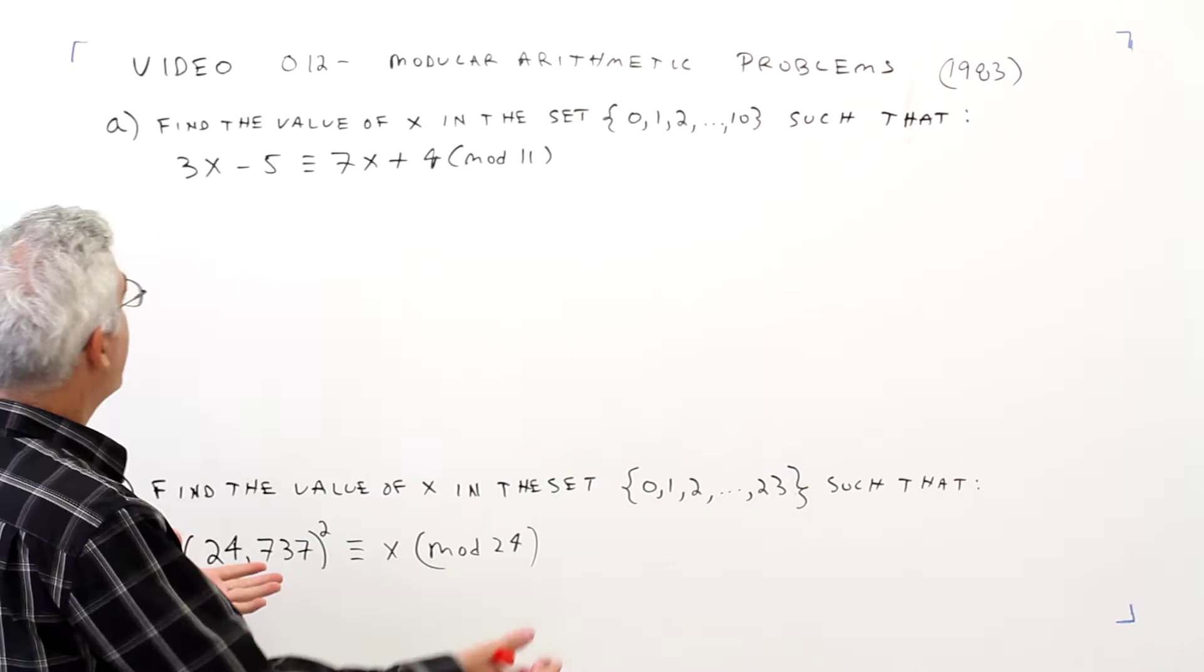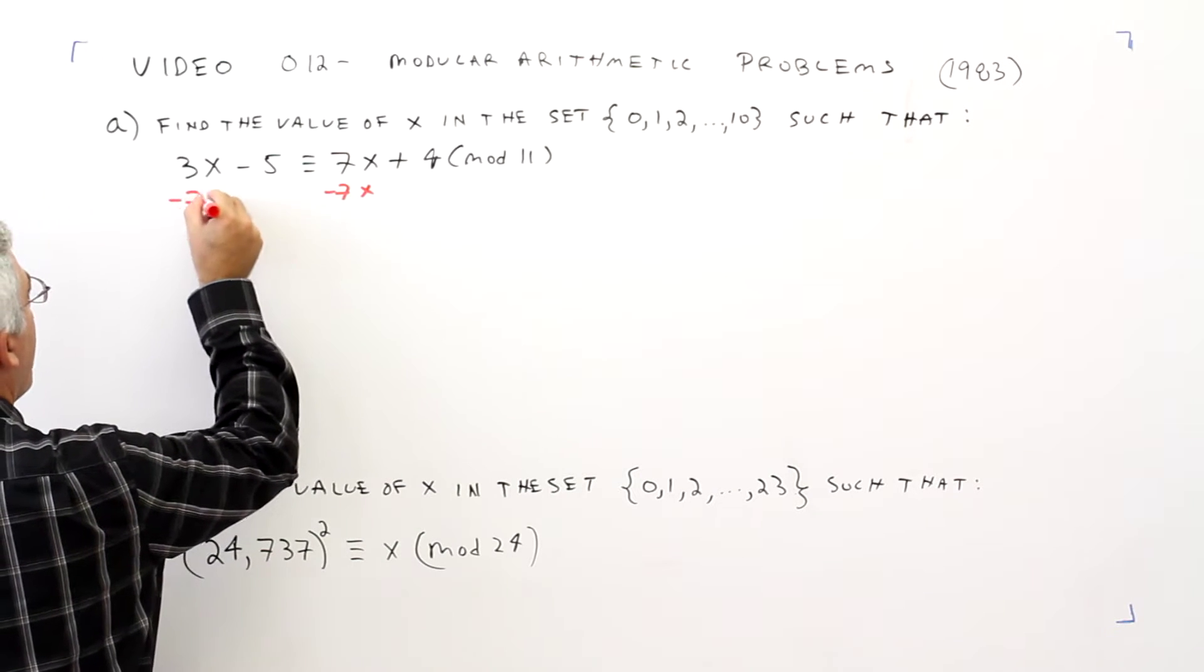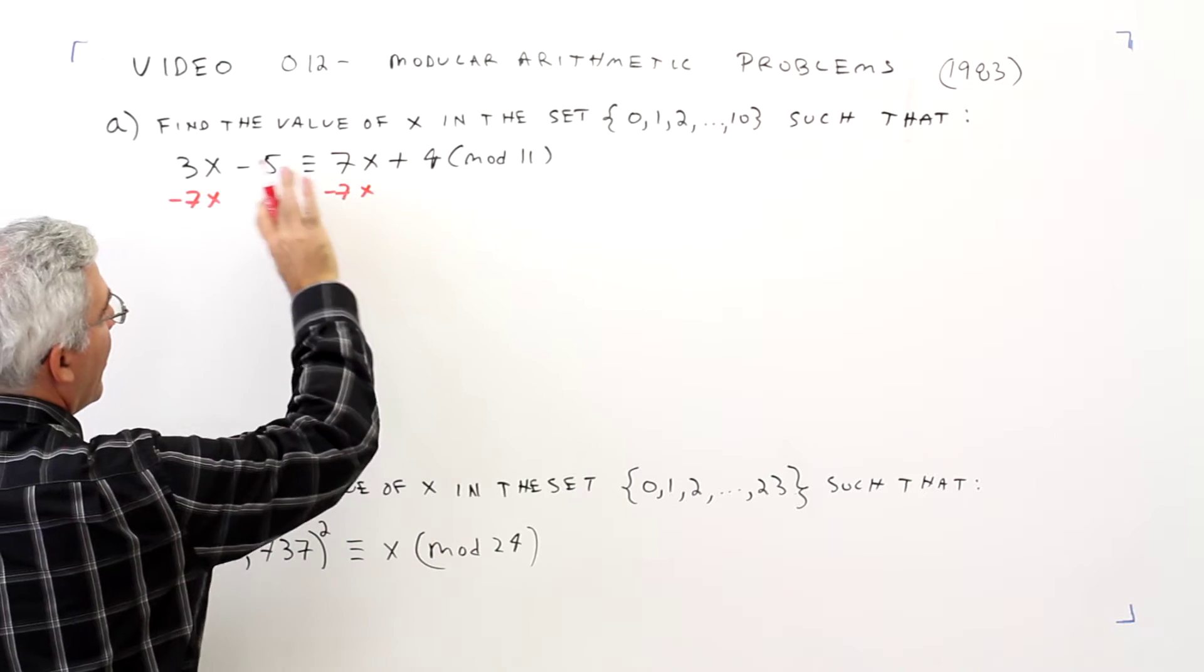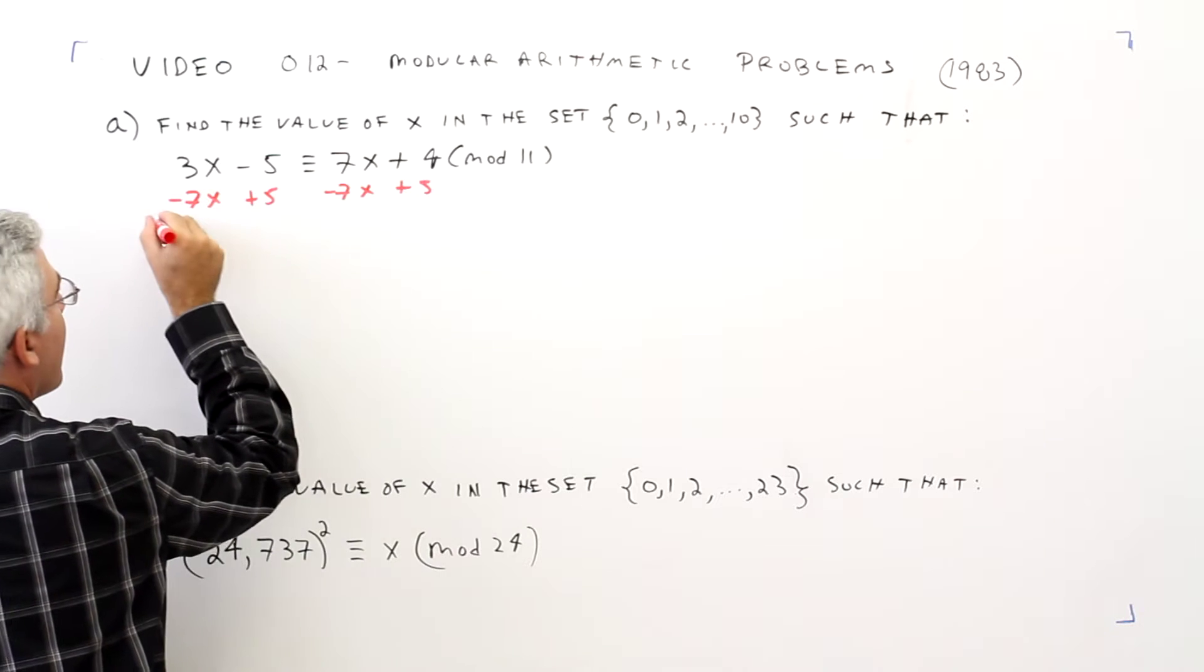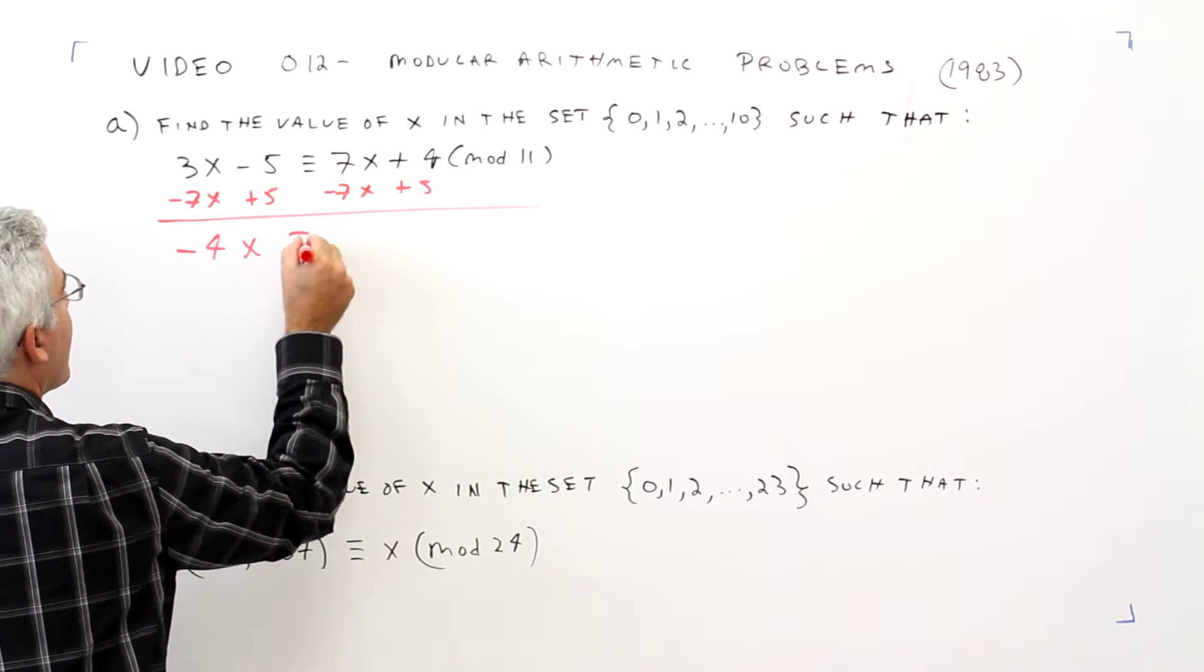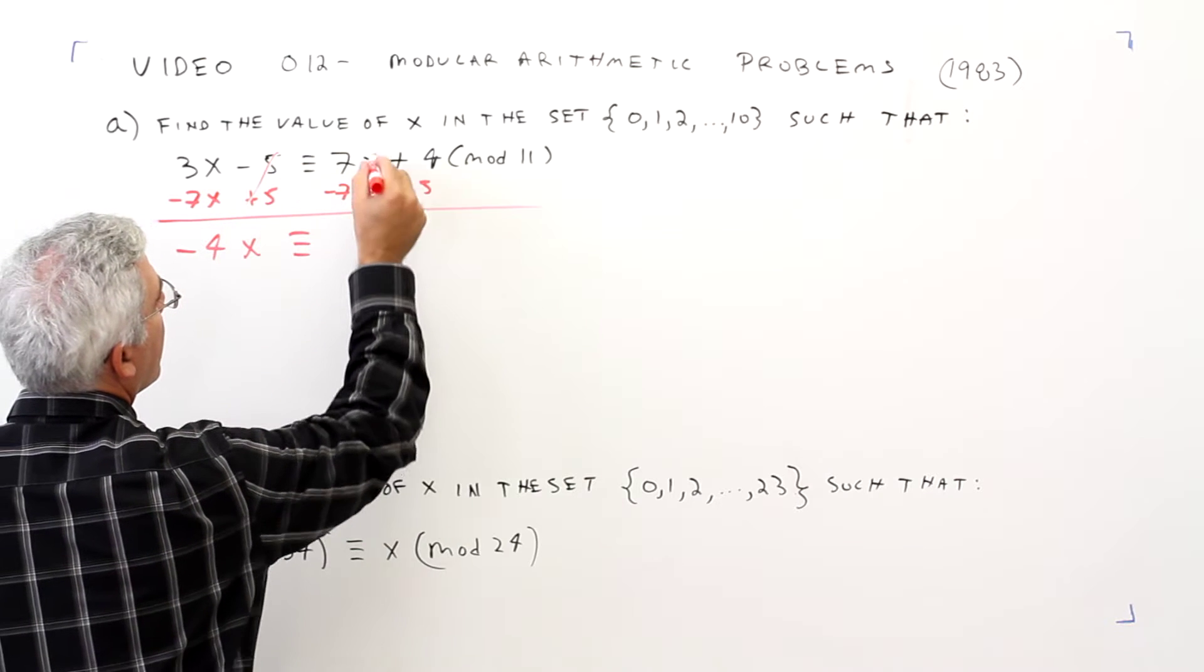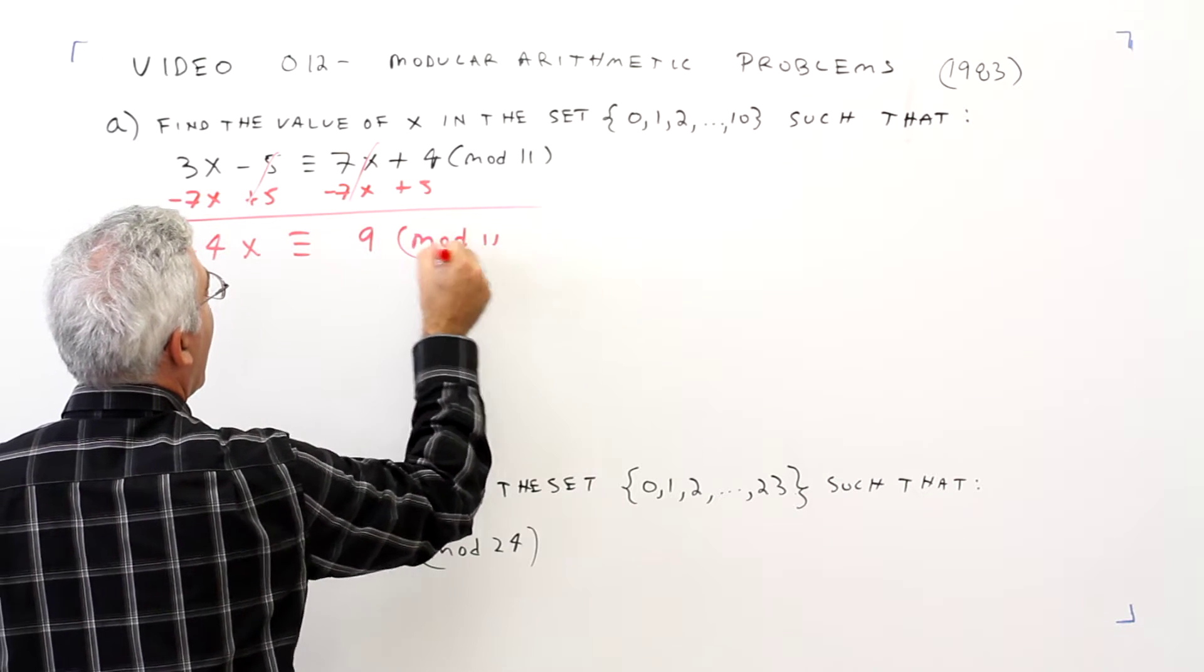All right, so let's just get the variables on the same side. So we'll go minus 7x, minus 7x, and I'll add the constants to the other side, plus 5, plus 5. To make a long story short, I'm going to get minus 4x is congruent to 9 mod 11.